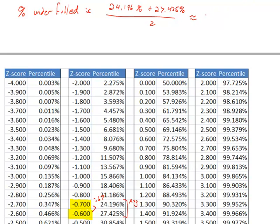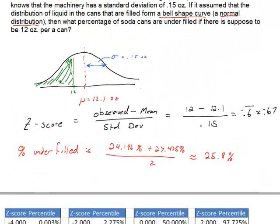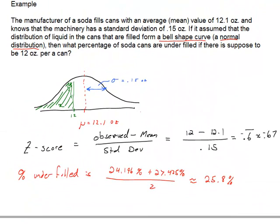This gets to be an answer that's roughly 25.8%. So based on this graph for our normal distribution, the percentage of the population of soda cans being filled with less than 12 ounces per can is about 25% of those.